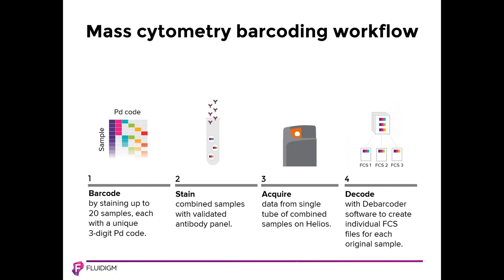This shows the mass cytometry barcoding workflow. First, up to 20 samples are each stained with a unique three-digit palladium code. Next, the barcoded samples are combined and stained, processed, and acquired in a single tube. Finally, the single barcoded FCS file is debarcoded with the debarcoding function in CyTOF software to create individual FCS files for each original sample.